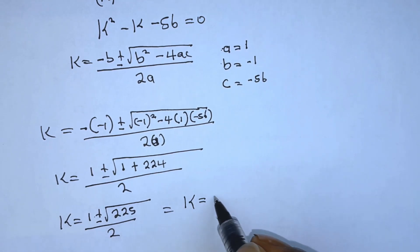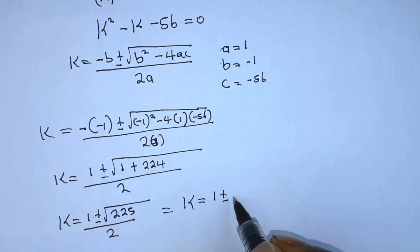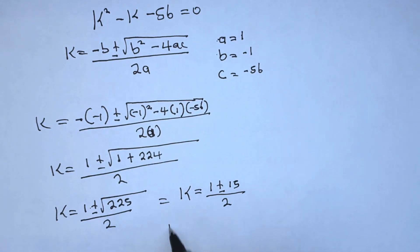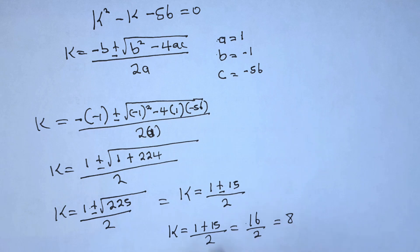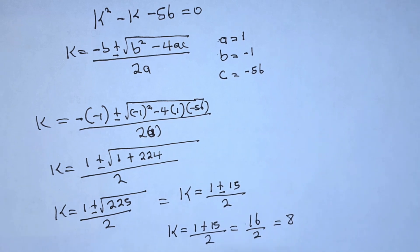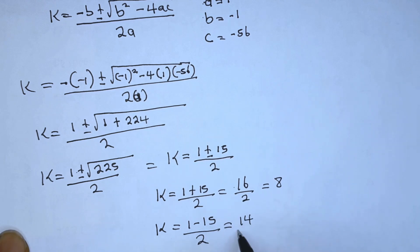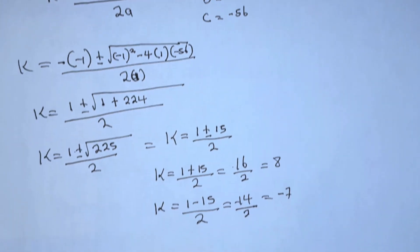Therefore k equals 1 plus or minus the square root of 225, which is 15, all over 2. So k equals 1 plus 15 over 2, which is 16 divided by 2, which equals 8. And k equals 1 minus 15 over 2, which is negative 14 divided by 2, which equals negative 7.